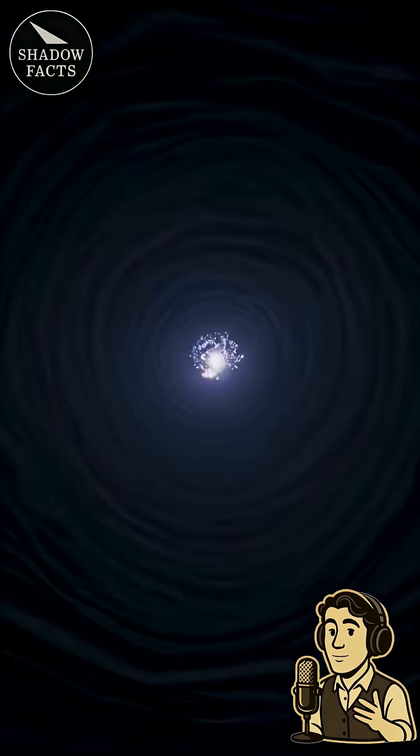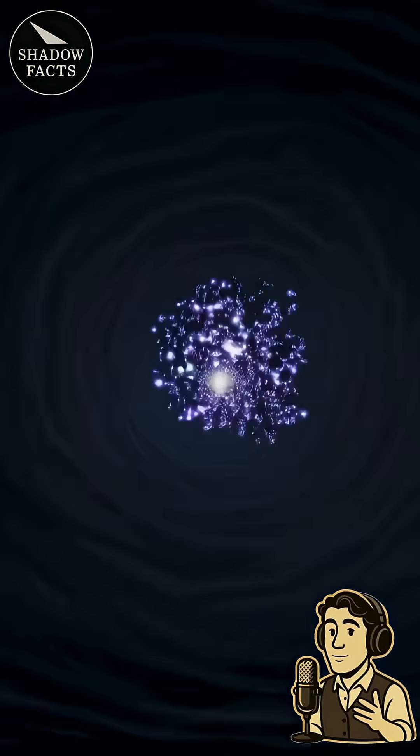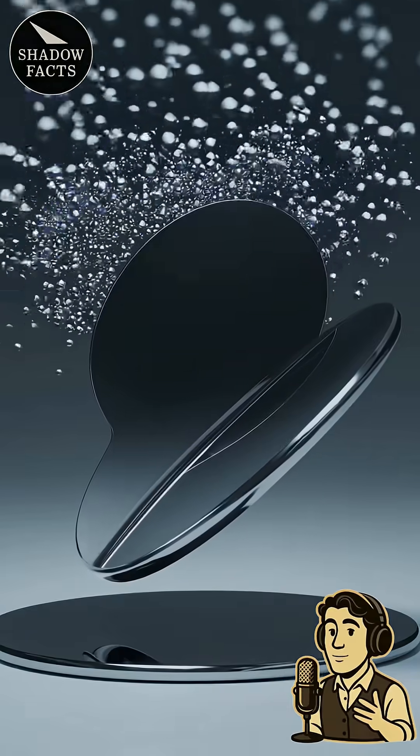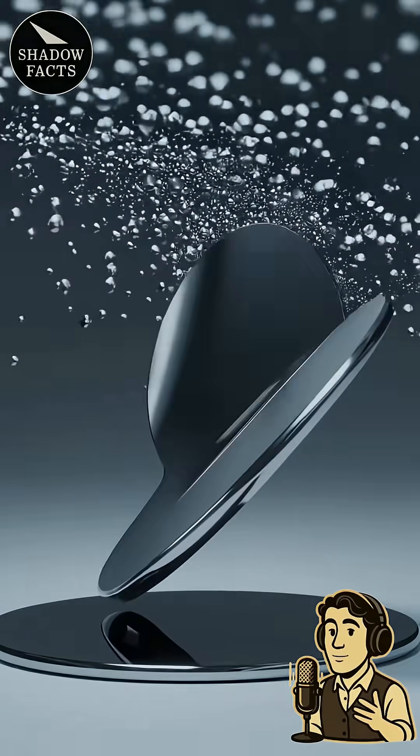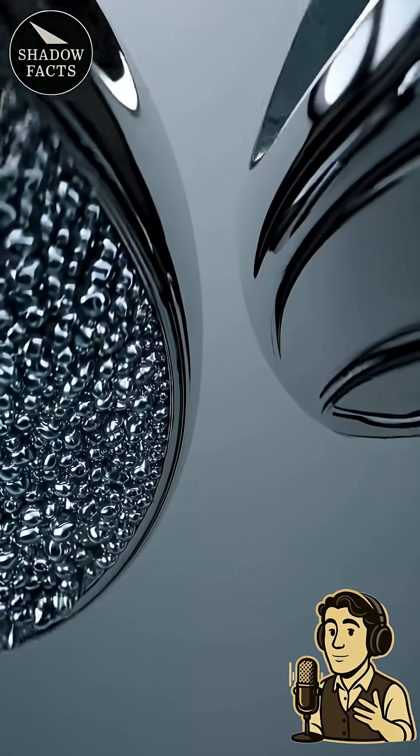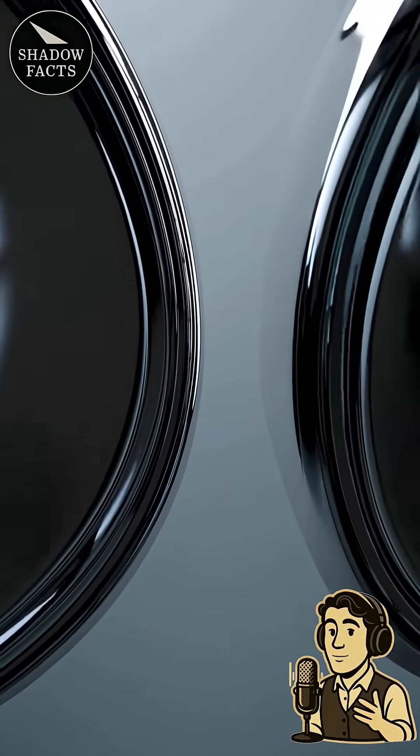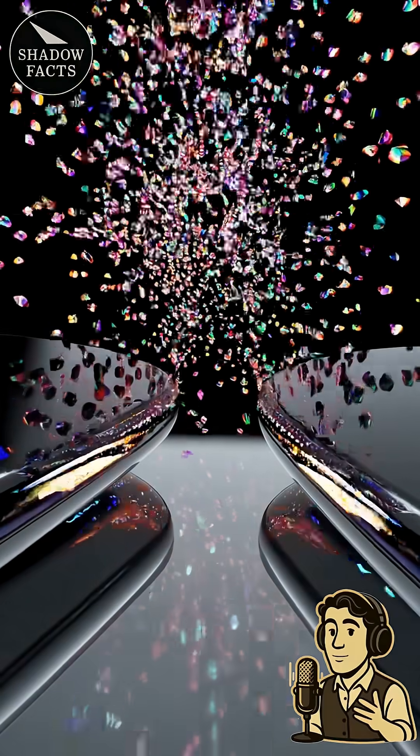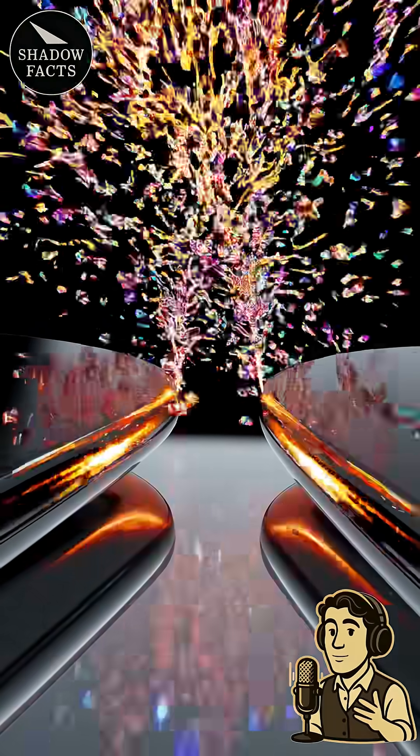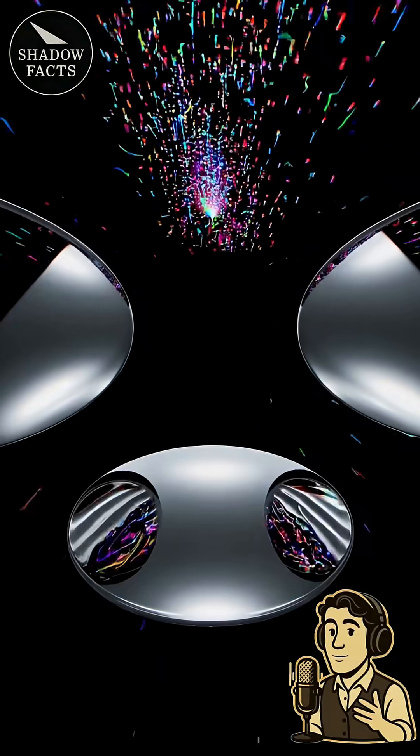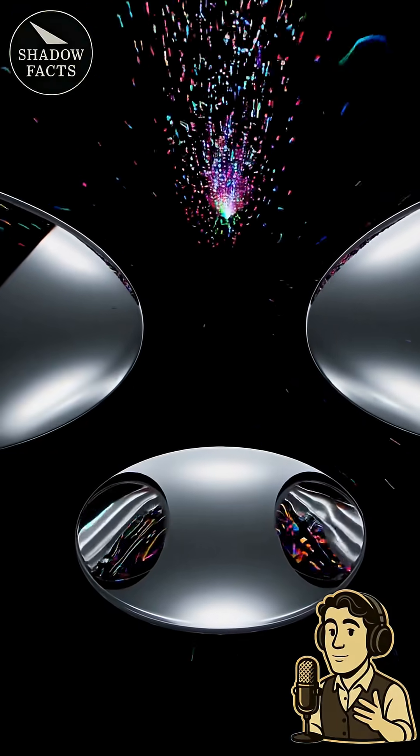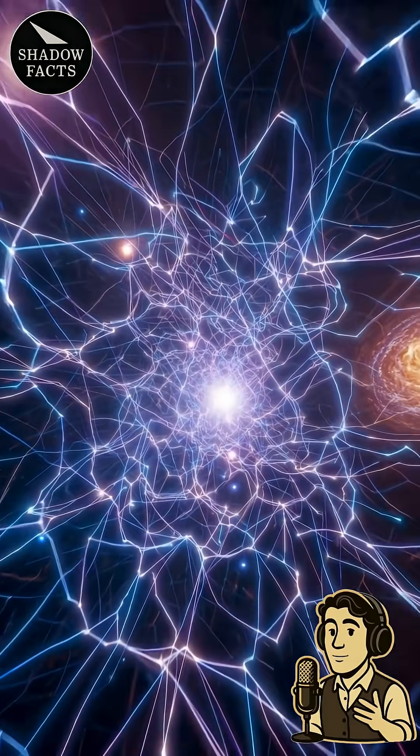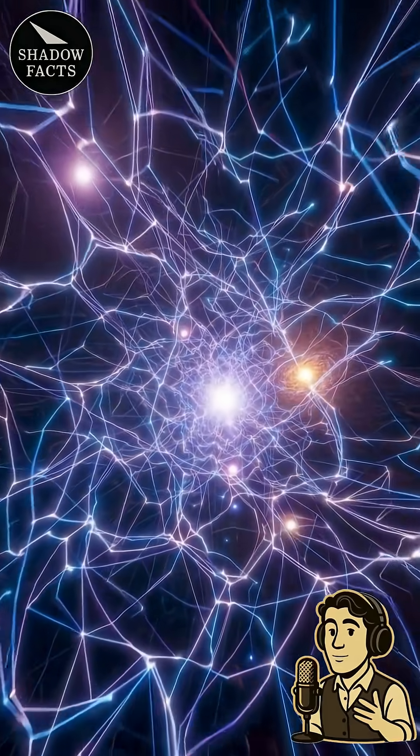But hold up. It gets even crazier. This empty vacuum is strong enough to push metal plates together. That's the Casimir effect. You put two plates super close, and all these virtual particles around them start shoving the plates inward, like invisible hands pressing on them non-stop. And dude, this isn't sci-fi. It's measured. It's real as hell.